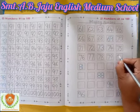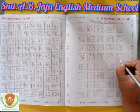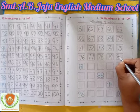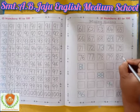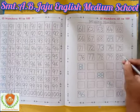After 79, which number will become? Write down 8, then write down 0. 80. So after 80, next number is 81.